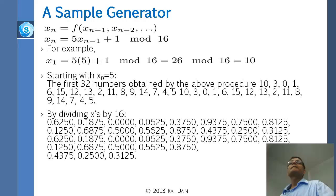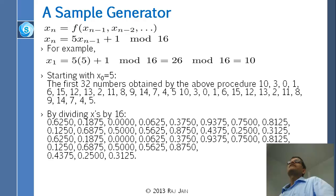If you know the formula, then you can figure out what the next number would be. If I told you the current number is 0, and you know the formula, you can tell the next number. That's why these are called pseudo-random — they pass the randomness test, but if you know the secret, then they don't.